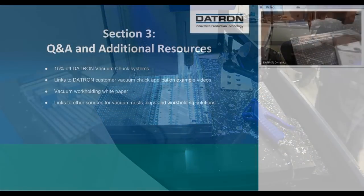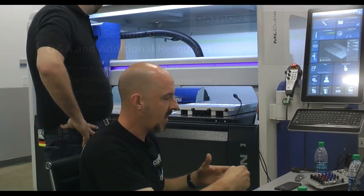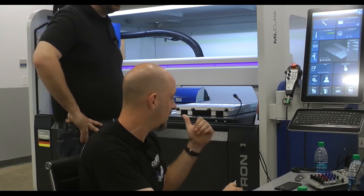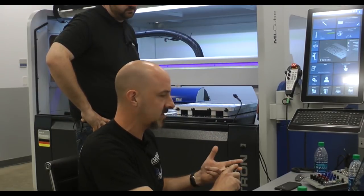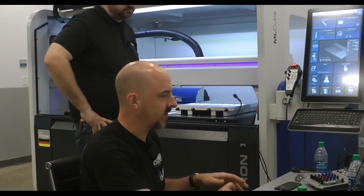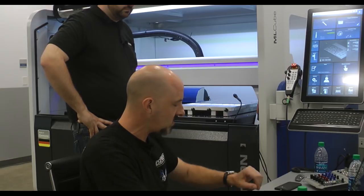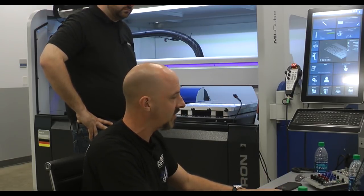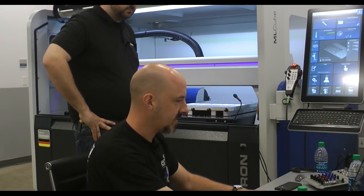So, we're getting close to the end of our allotted time here. Everybody, check your email inbox for that 15% off Datron vacuum truck systems coupon code. We're also going to provide links to examples of Datron customers using vacuum trucks, white papers on vacuum work holding tips and strategies written by Dan here, as well as some other links to companies that you can get vacuum nest materials, suction cups, vacuum pumps, other work holding solutions. For those that got to conclude with us, we thank you very much for hanging out with us. And at this point, we're going to move on to the Q&A section of the webinar.